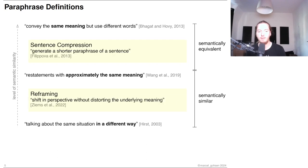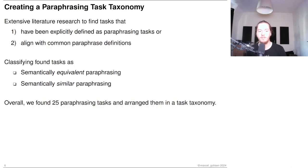These two text pairs are also examples of two different tasks, namely sentence compression and reframing. According to the definitions of these tasks, they are specializations of paraphrasing tasks. So our goal was to find all the paraphrasing tasks and arrange them in a paraphrasing task taxonomy to get a clear picture of what being a paraphrase can entail.